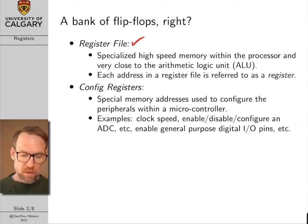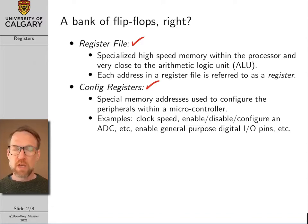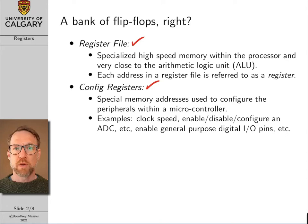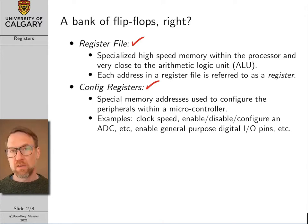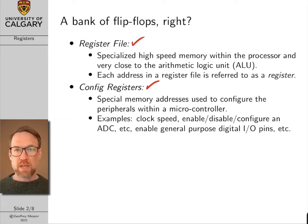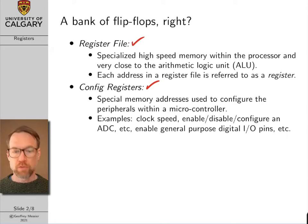The second meaning we'll be using is configuration registers. This is very important in the hands-on exercises where you're working directly with the AVR processor. A configuration register is basically a special memory address that we use to configure the peripherals of a microcontroller — for example, to enable an analog-to-digital converter or specify the period of a timer, by writing binary numbers to special reserved areas in memory.